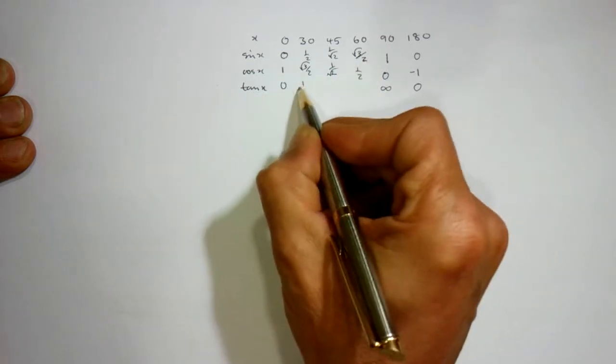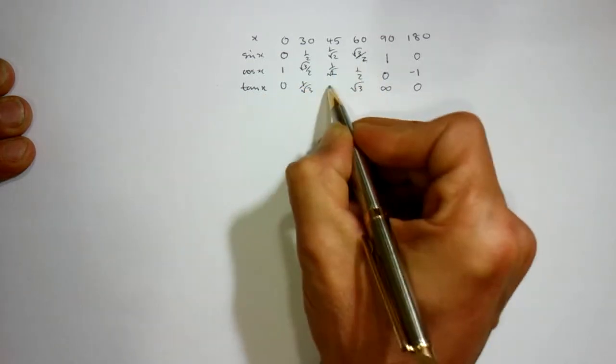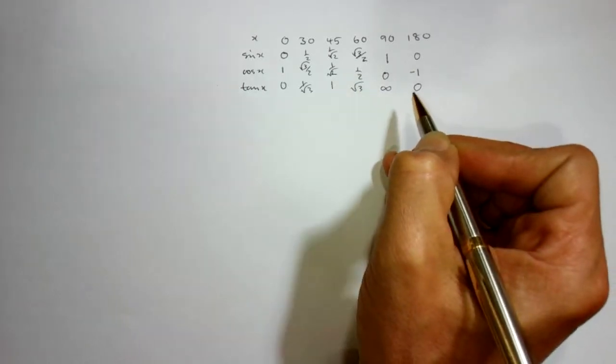And tan of x: 1 over root 3, this is root 3, and this is the easy one. So that didn't take long.